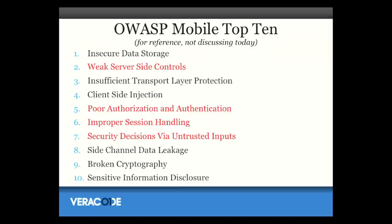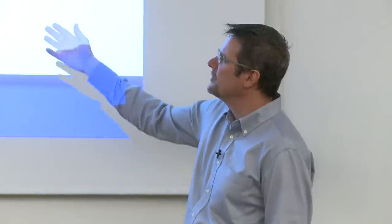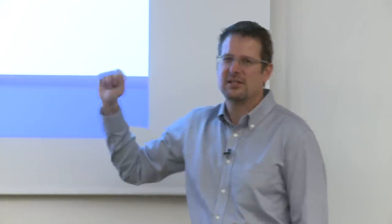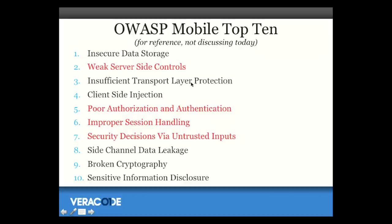For reference, the OWASP mobile top ten list from the Open Web Application Security Project's working group is a little different than ours — six out of ten are the same, four are different. They have a somewhat different take on mobile app risk, where a lot of their issues are really about how the application communicates to a back-end server or what's going on on the back-end server, rather than apps with risky behavior that are straightforward client apps.